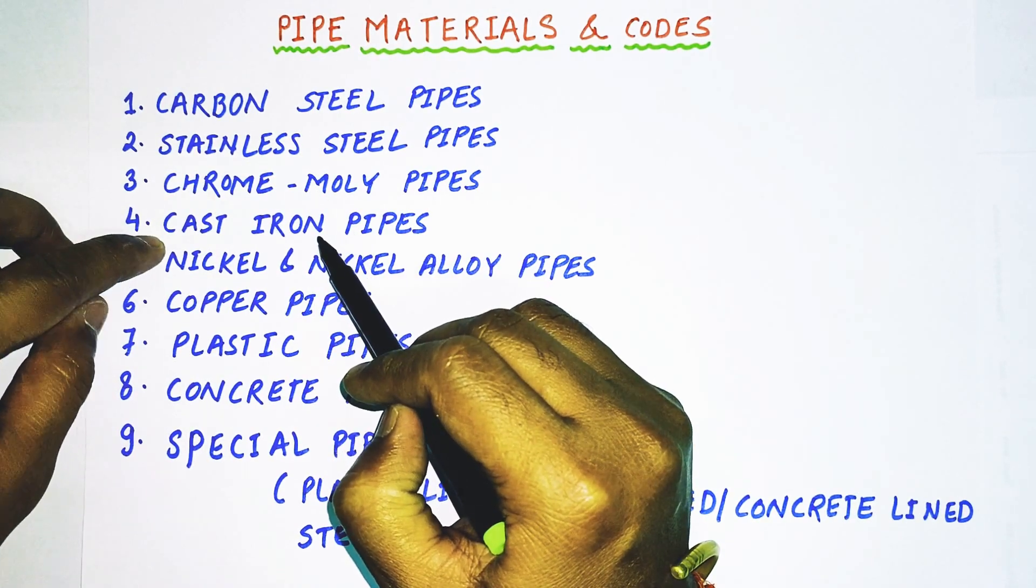In ASME Section 2 Part A, the materials are given and you will get all the materials and their specifications. ASTM material and ASME material are both the same. The only difference is that in ASTM they designate it as ASTM A and the specification and grade, for example ASTM A 106 Grade A. The same material you will find in ASME but they designate it as SA. In ASTM they use A and in ASME they use SA. Rest of the things are the same.